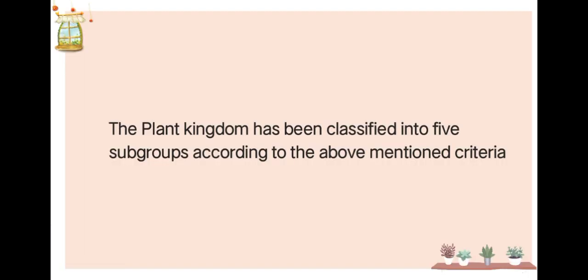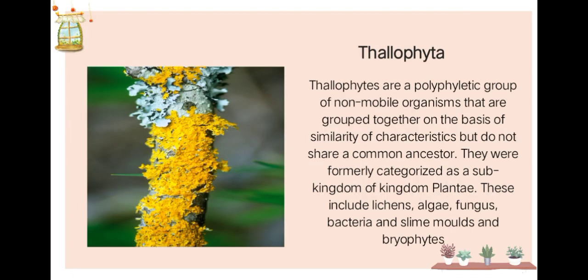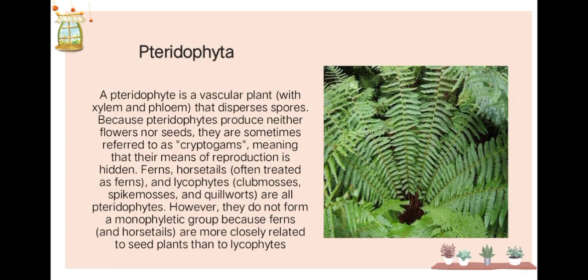The plant kingdom has been classified into five subgroups. First, Thallophyta or thallophytes — a polyphyletic group of non-motile organisms grouped together on the basis of similarity of characteristics but without showing a common ancestor. They were formally categorized as a sub-kingdom of Kingdom Plantae, and include lichens, algae, fungi, bacteria, and slime molds.